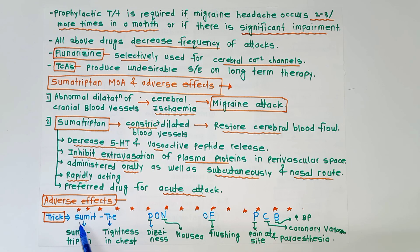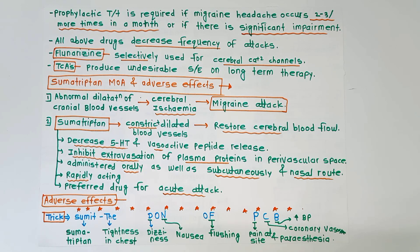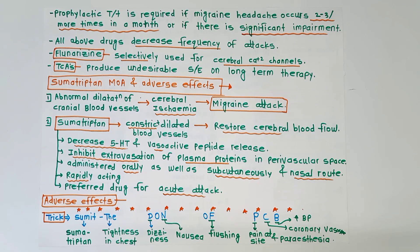The trick to remember the adverse effects of sumatriptan is 'SUMIT the dawn of PCB' — SUMIT for sumatriptan: D for tightness of chest, D for dizziness, N for nausea, F for flushing, P for pain at the site of injection and paresthesia, C for coronary vasospasm, and B for increased blood pressure. Thank you for watching — if you like this video, do subscribe to my channel.